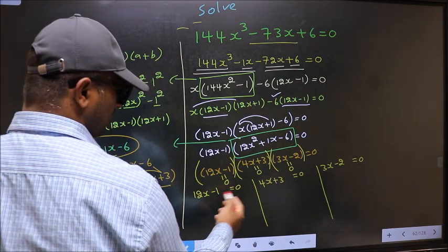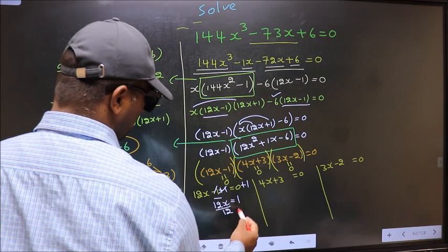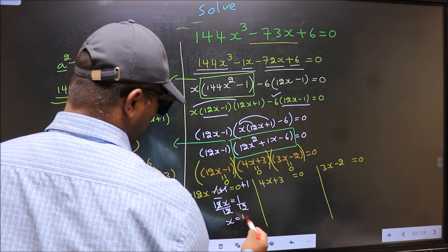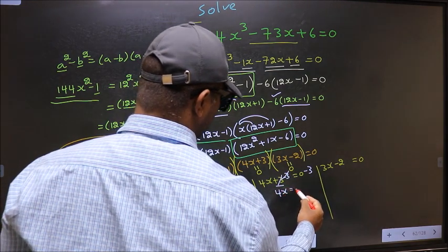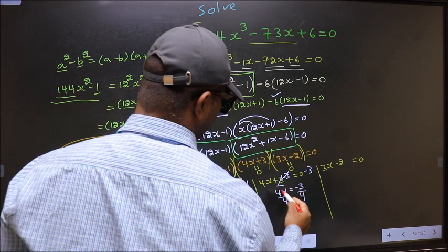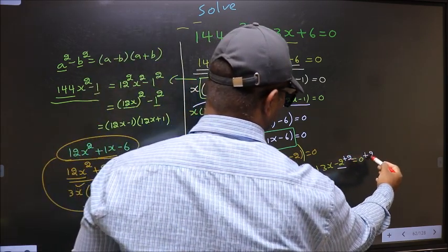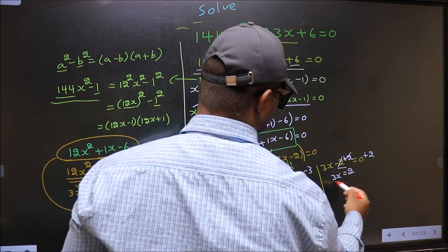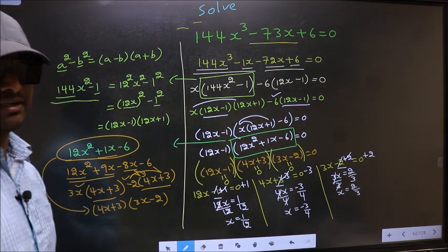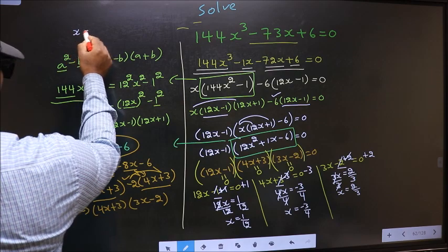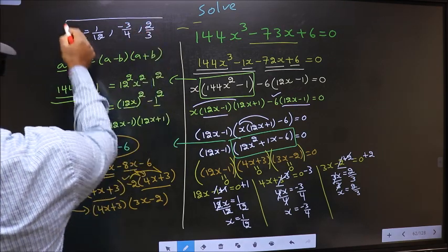From 12x minus 1 equal to 0, adding 1 gives 12x equal to 1, so dividing by 12 gives x equal to 1/12. From 4x plus 3 equal to 0, subtracting 3 gives 4x equal to minus 3, so dividing by 4 gives x equal to minus 3/4. From 3x minus 2 equal to 0, adding 2 gives 3x equal to 2, so dividing by 3 gives x equal to 2/3. The x values are 1/12, minus 3/4, and 2/3. This is our answer.